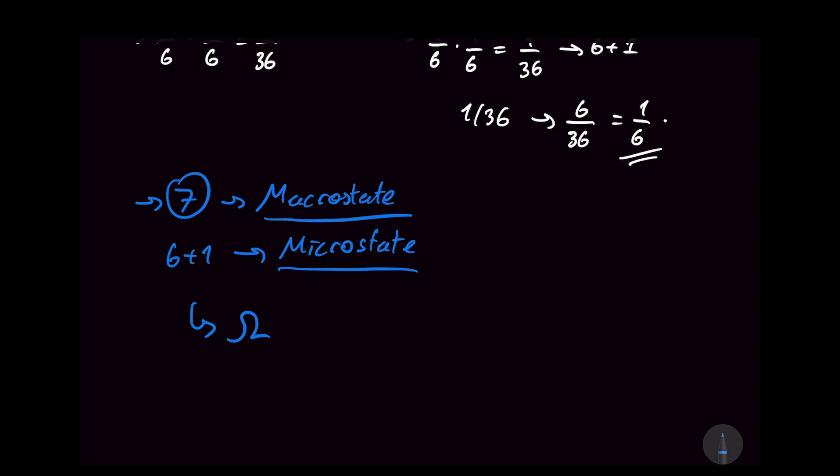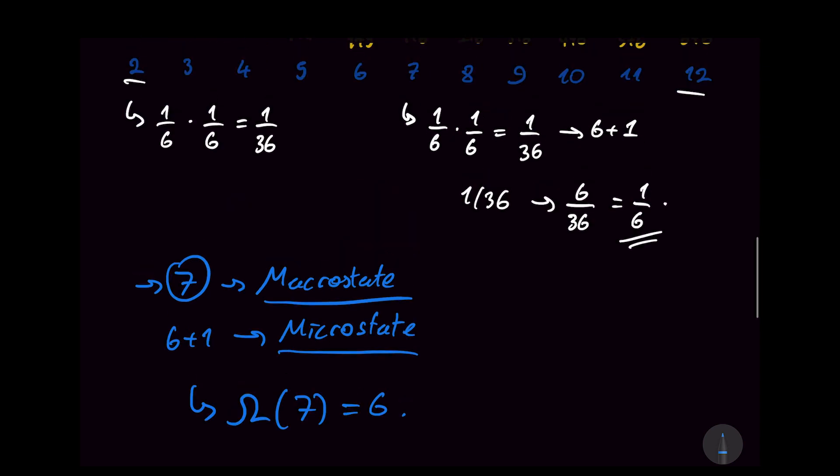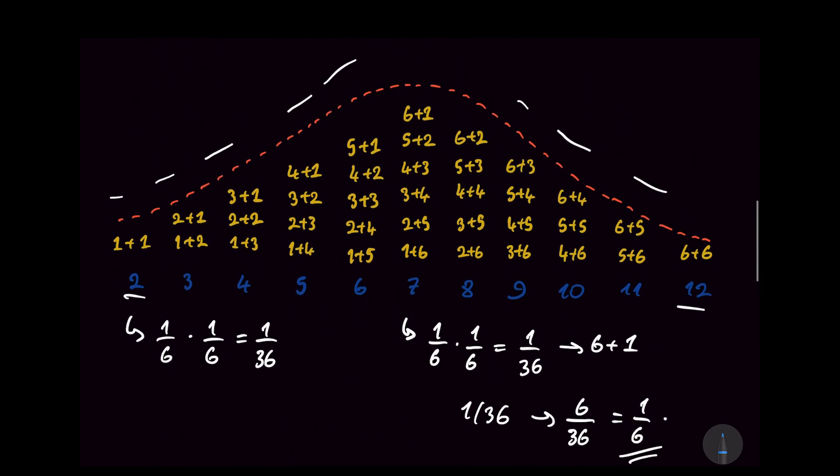So we define a number, usually denoted by omega, which is the number of microstates that give rise to a certain macrostate. So to give rise to the number 7, the number of microstates would be 6, as we just saw. And if we look back at our chart here, we can see that 6 is the maximum number of microstates that we have in this system.